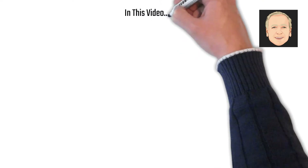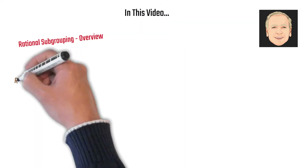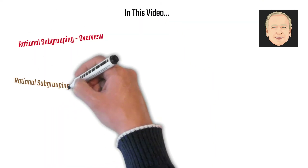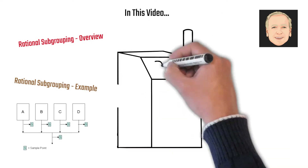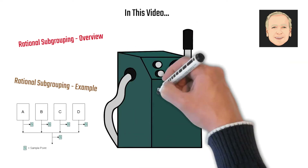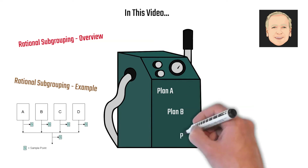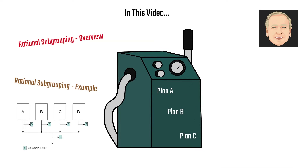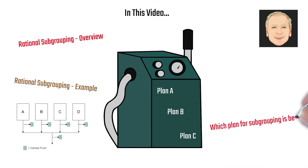In this video, we're going to take a look at rational subgrouping — an overview. Then we're going to look at an example involving four machines making the same product. We're going to have three different subgrouping plans: A, B, and C, and we want to determine which subgrouping plan is best.